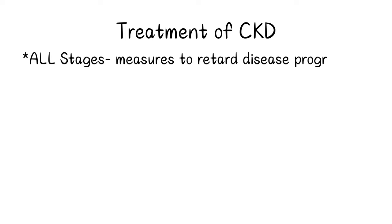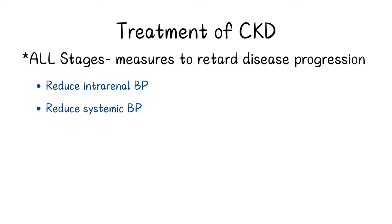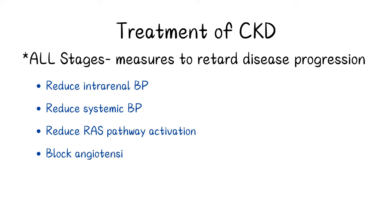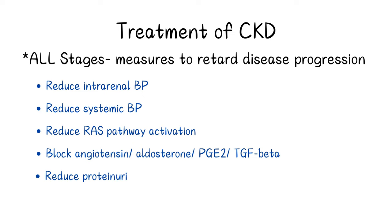The treatment of CKD depends on which stage you're dealing with. All stages require measures to retard disease progression, such as reducing intrarenal blood pressure, reducing systemic blood pressure, reducing RAS pathway activation, blocking angiotensin and aldosterone, blocking PGE2 and TGF-beta, reducing proteinuria, and reducing cytokine release. One single intervention alone is not enough — multiple risk modification is required.